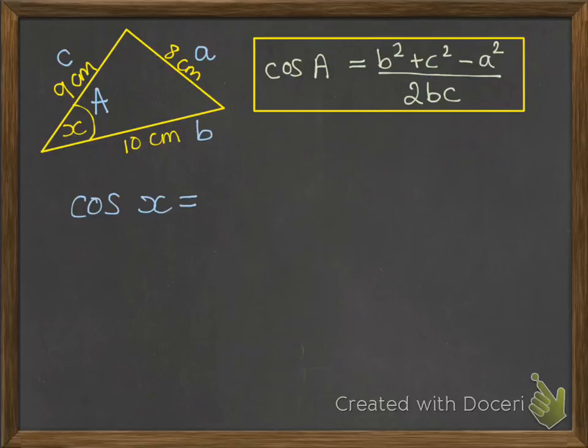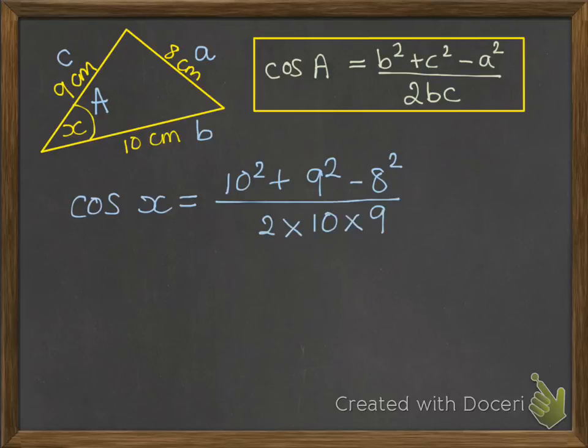Substituting into our formula we have a is x, obviously that's the thing we're looking for, so cos x is equal to b is 10, c is 9, a is 8, so 2 times b times c on the bottom. Work out what that is so cos x is now equal to 0.65 to two decimal places.